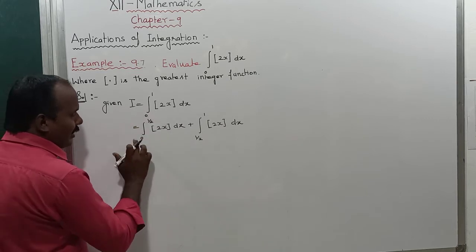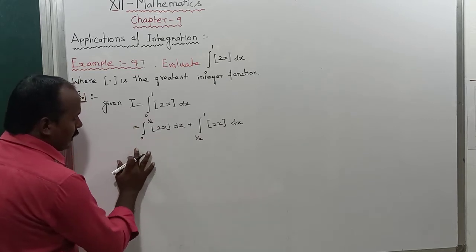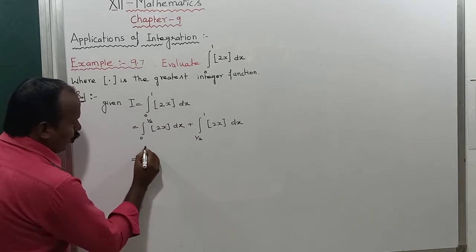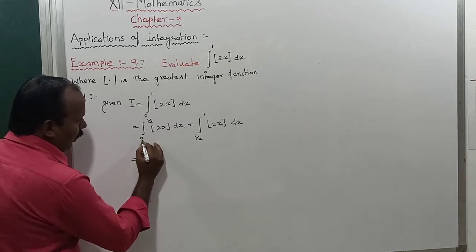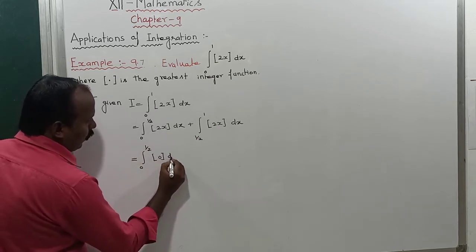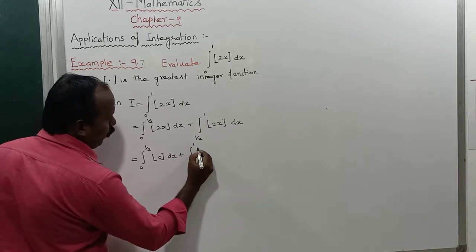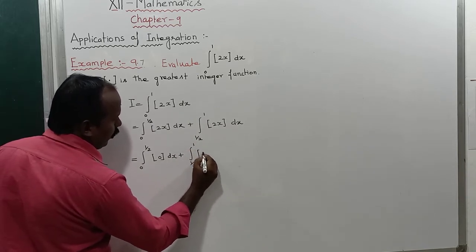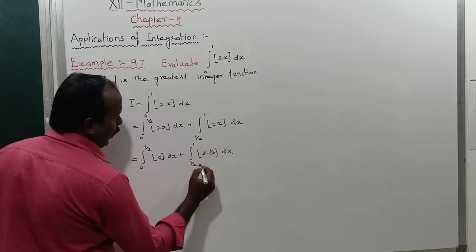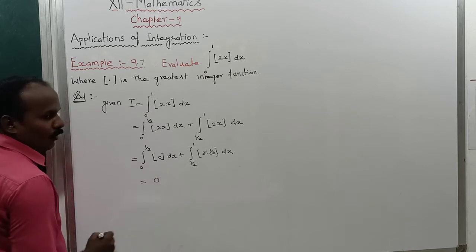Now apply the greatest integer function values within each limit. On [0, 1/2), x is replaced by 0, so ⌊2x⌋ = 0. The first integral becomes ∫₀^(1/2) 0 · dx. On [1/2, 1], ⌊2x⌋ = 1, giving ∫_(1/2)^1 2·(1/2) · dx. The 2 cancels.